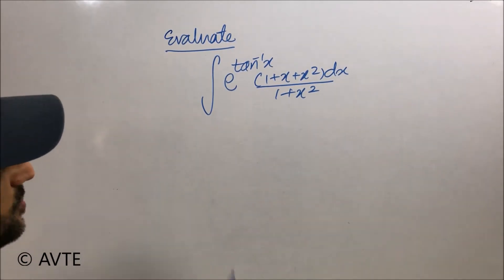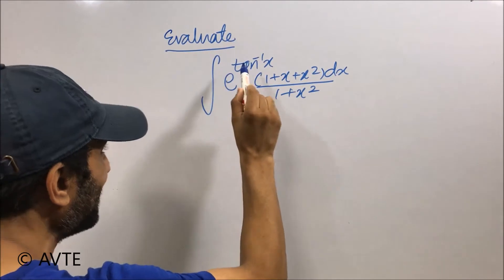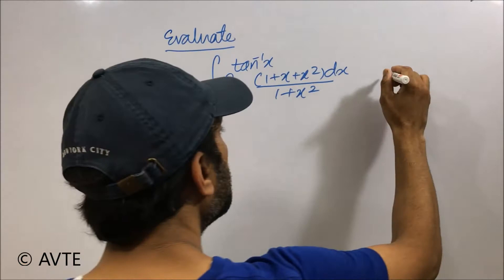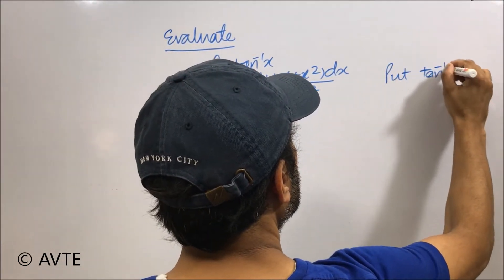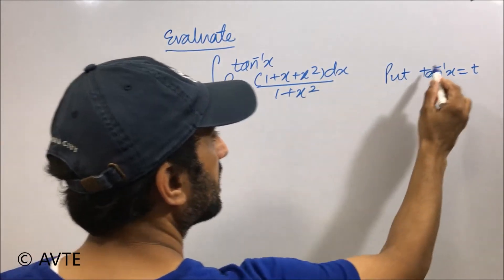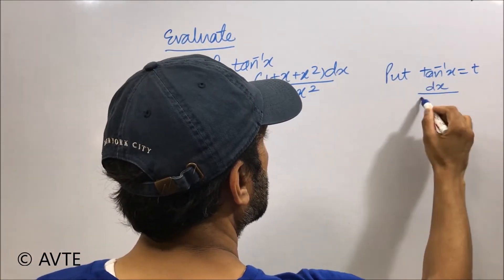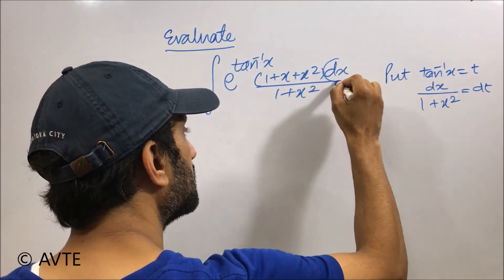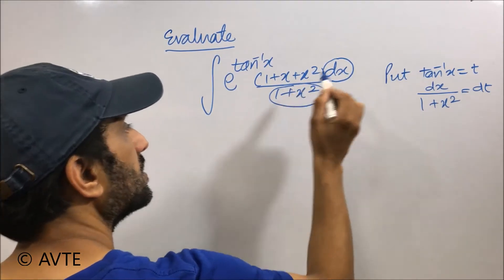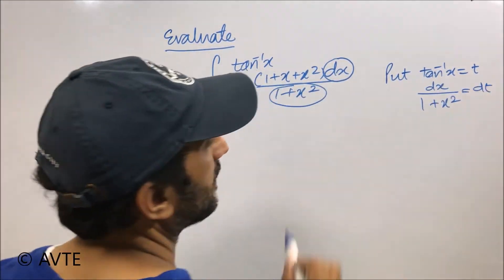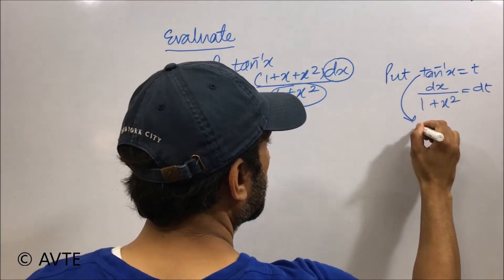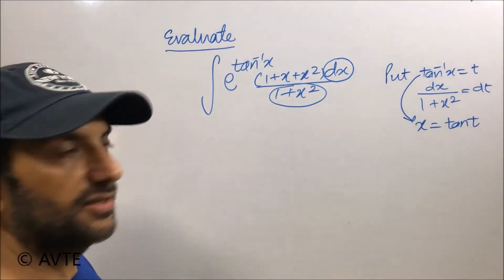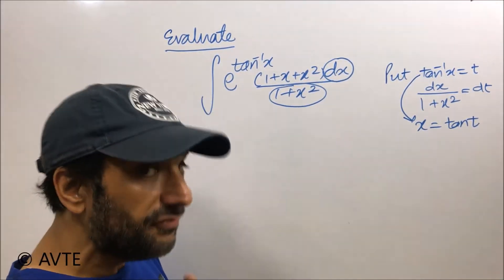In this question, the best approach will be to put tan inverse x equal to t, or equivalently x equal to tan t — these are one and the same thing. We put tan inverse x equal to t because the derivative of tan inverse x is dx upon 1 plus x squared, and the other side will be dt. This substitution handles the entire denominator, and x can be expressed in terms of tan t. Both forms of the substitution are valid.